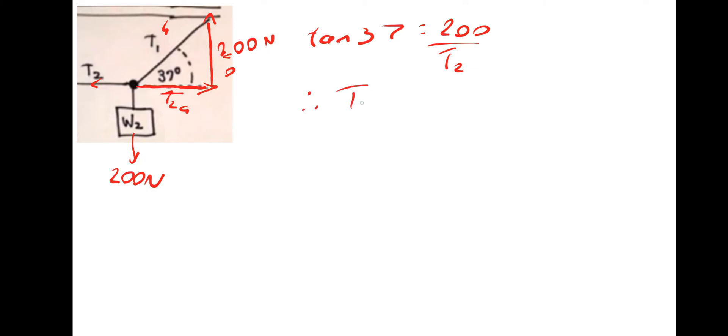Therefore T2 is equal to 200 divided by tan 37, which gives us tension 2 of 265.41 newtons. If you put 265, that's fine. It's not a problem.